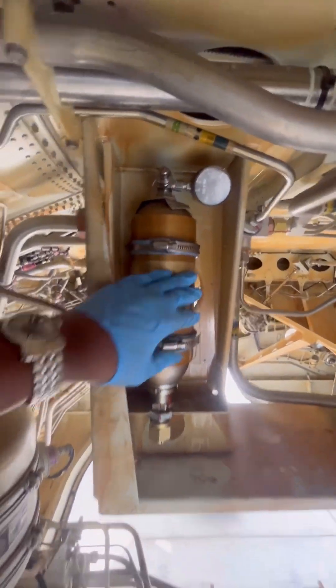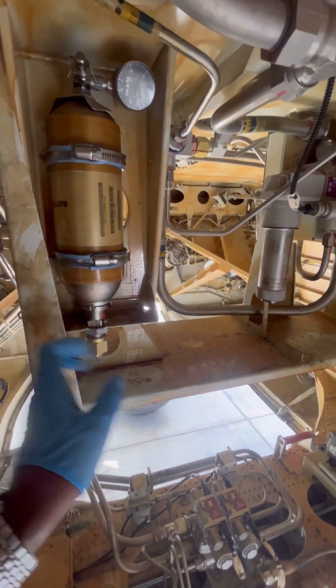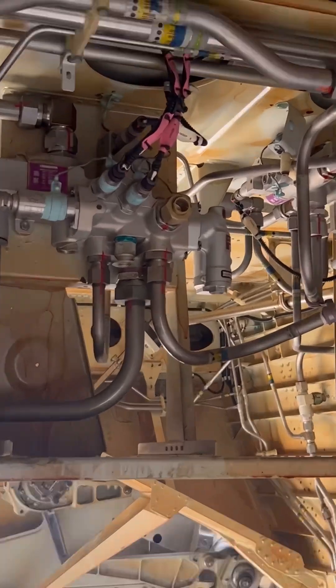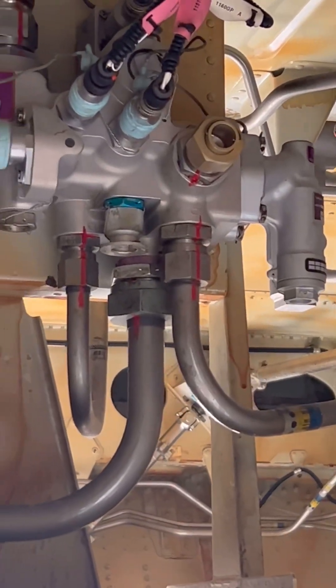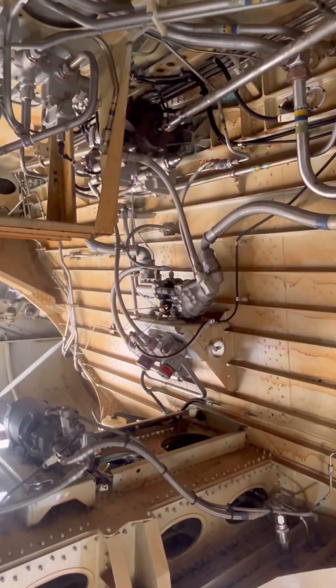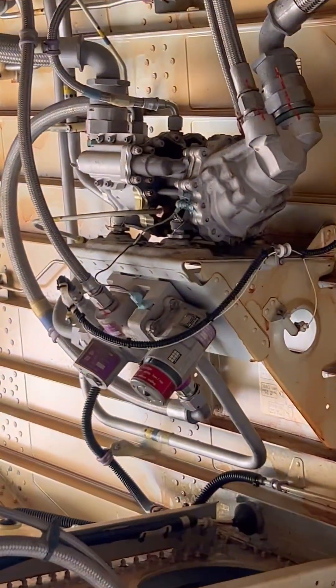Once these plugs are torqued and secured, we apply a developer on them and perform a leak check. The exact procedure for the leak check is in the AMM. Once the leak check is done, an independent inspection must be performed to verify everything is properly installed, so that any errors or mistakes are caught early.